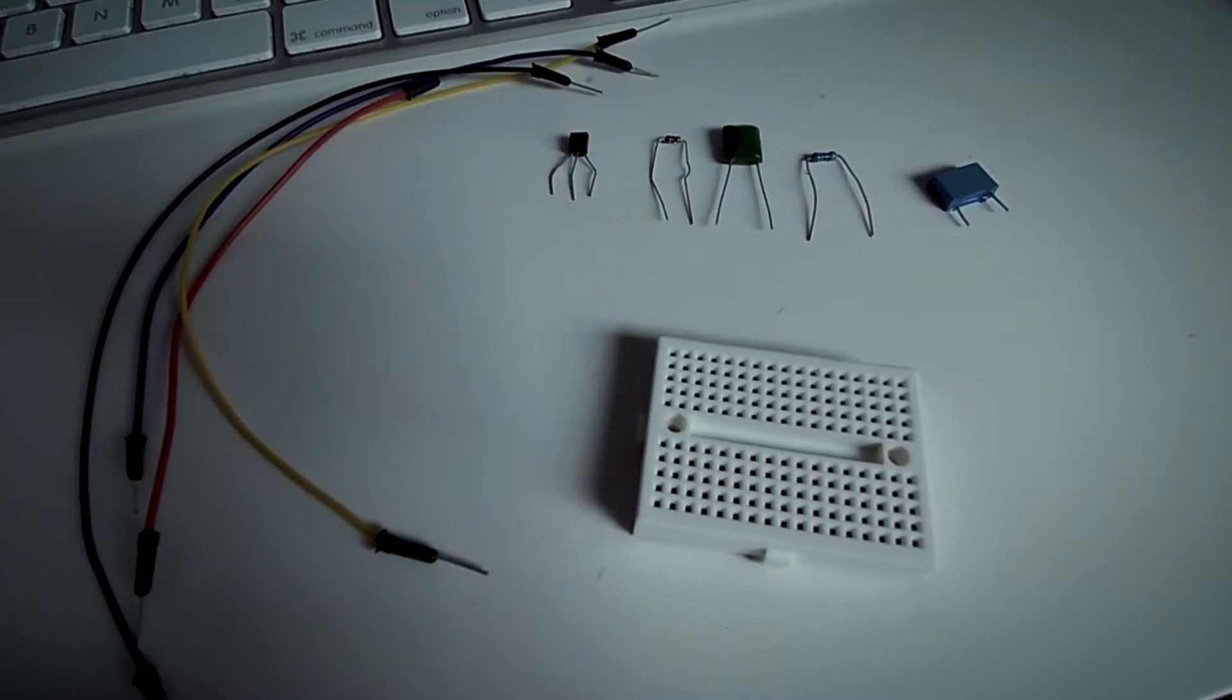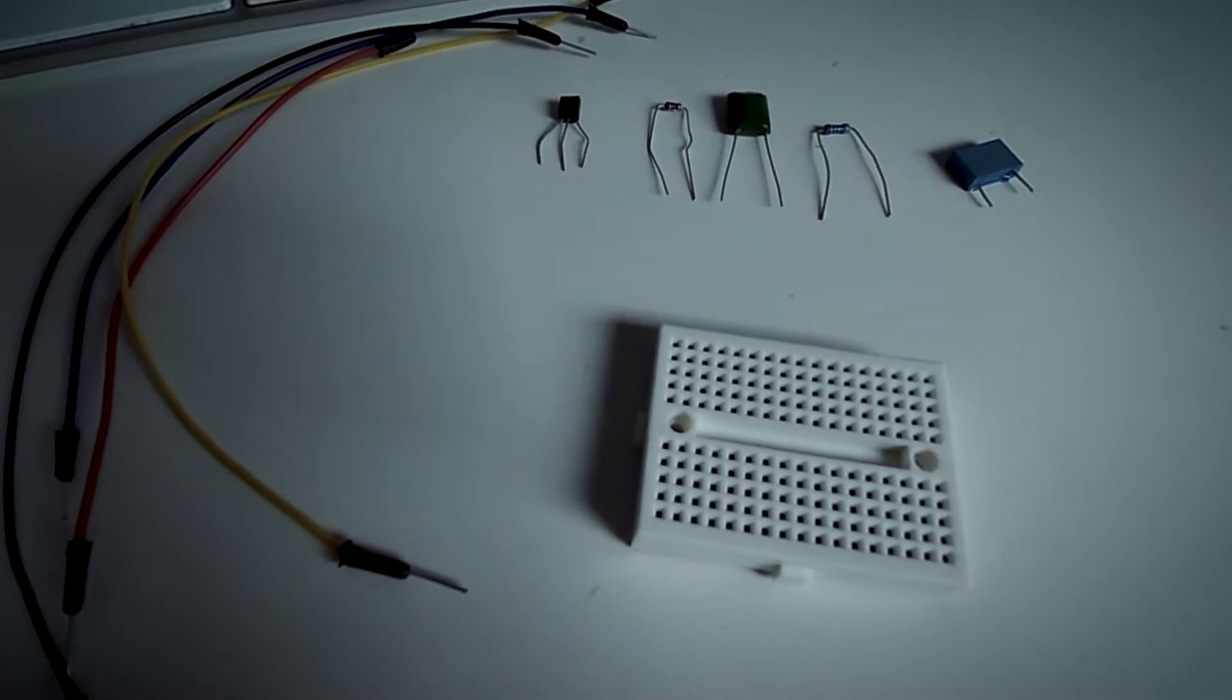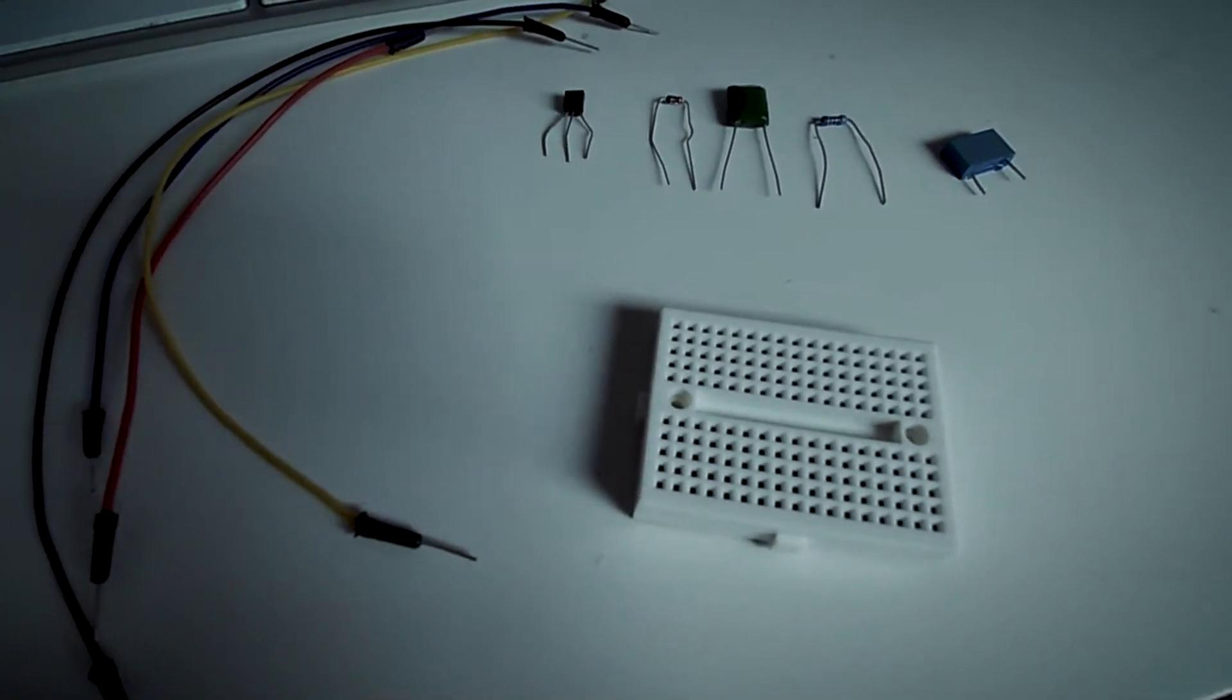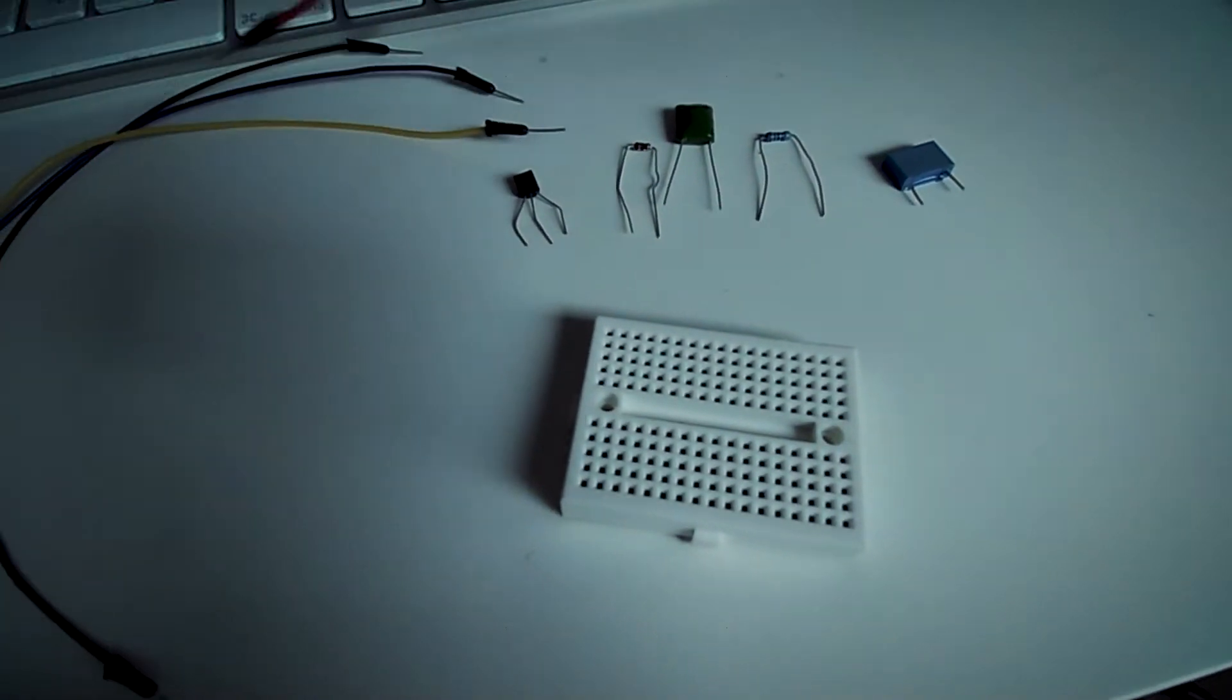Okay, so in this video I'm going to teach you how to make a really small fuzz pedal on a breadboard using ten things. Four of those ten things are wires - jumper wires. You got red for nine volt, yellow for output, blue for input, black for ground.